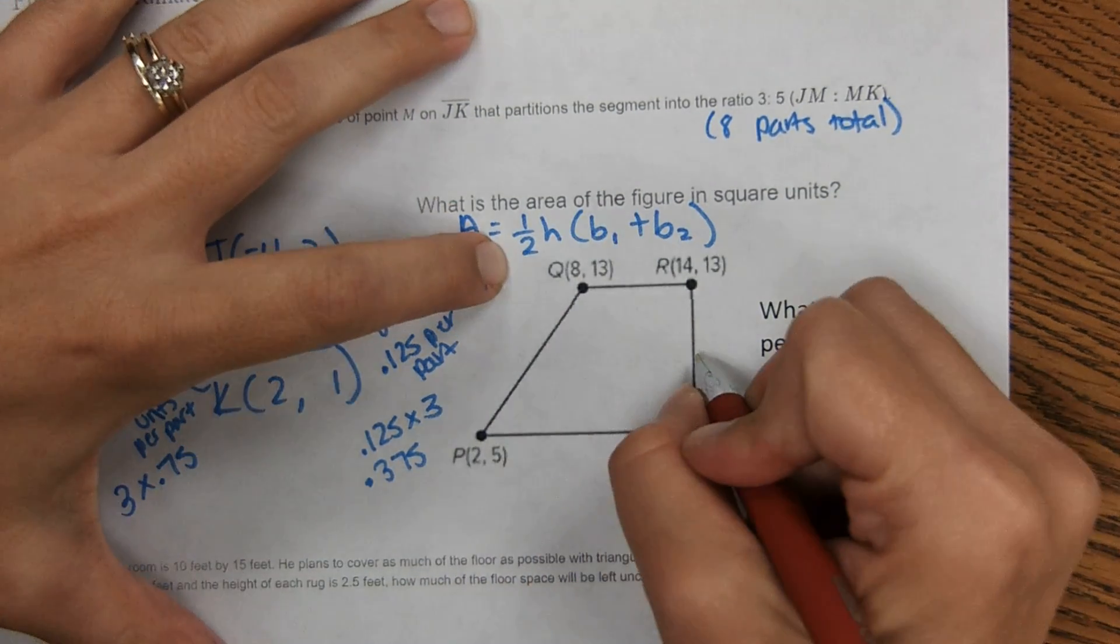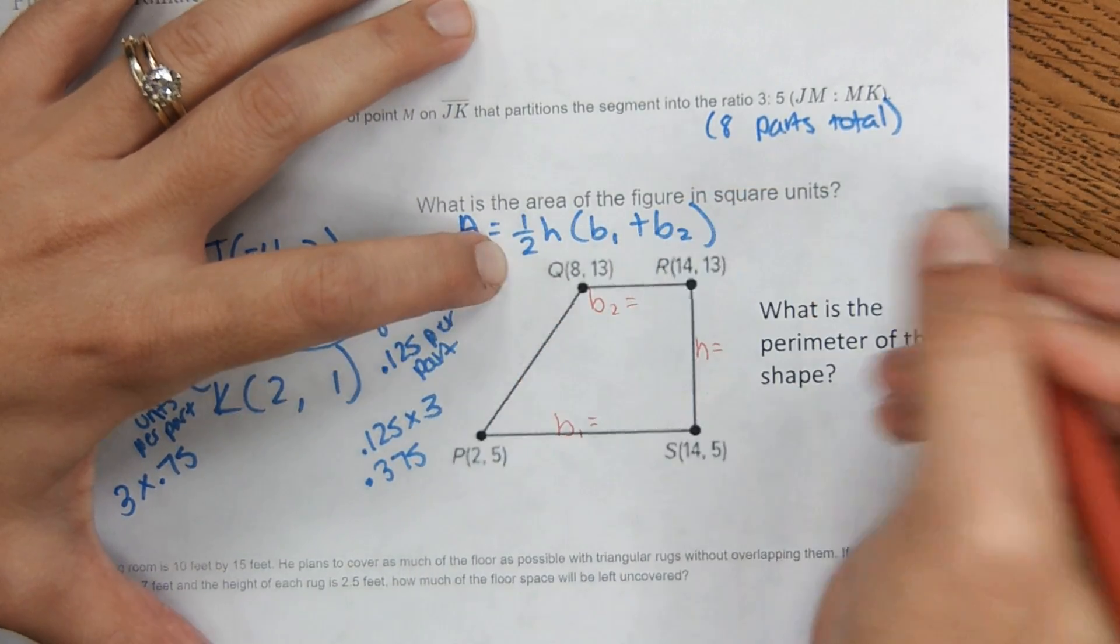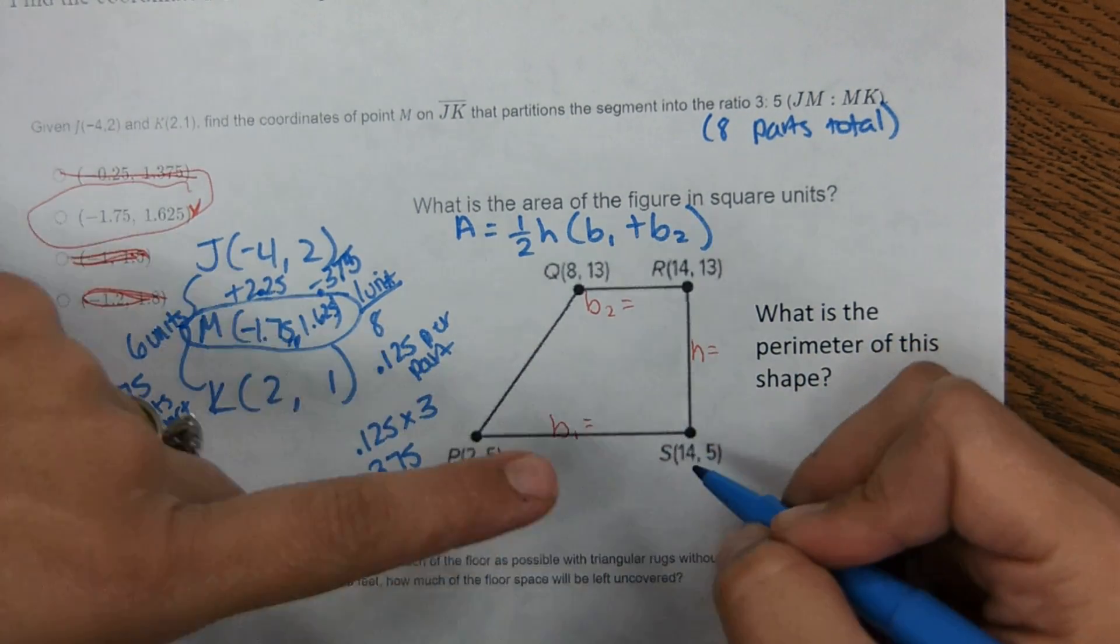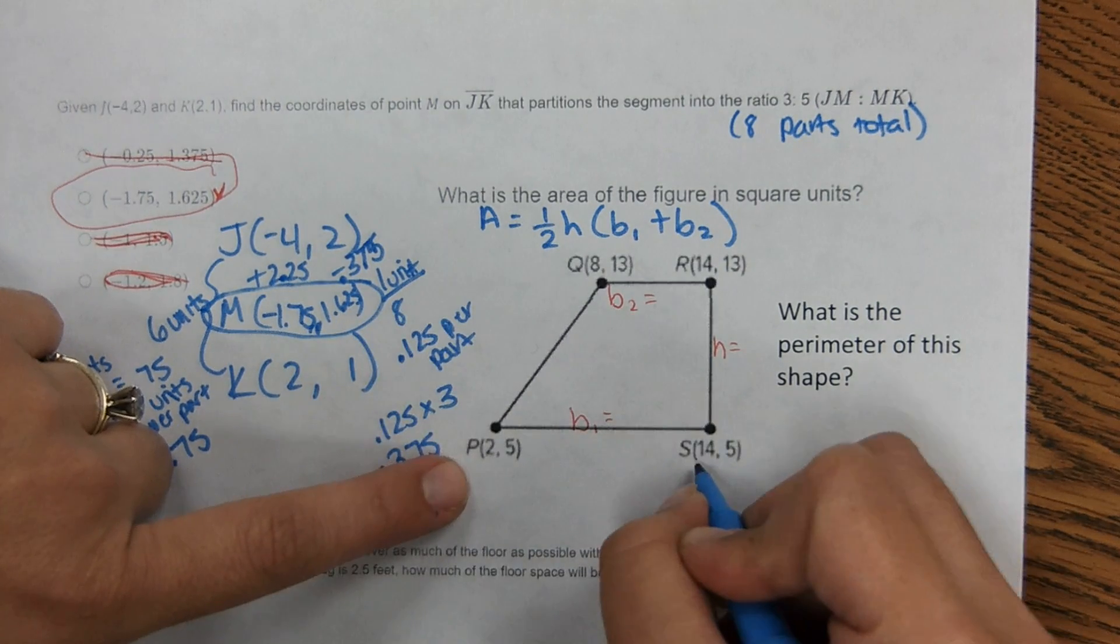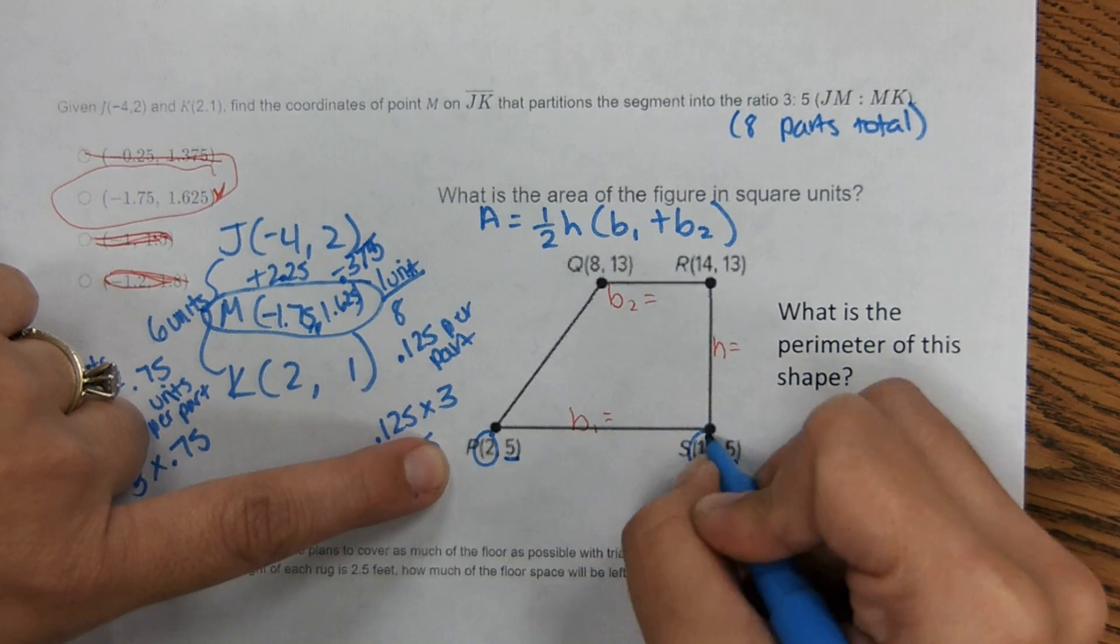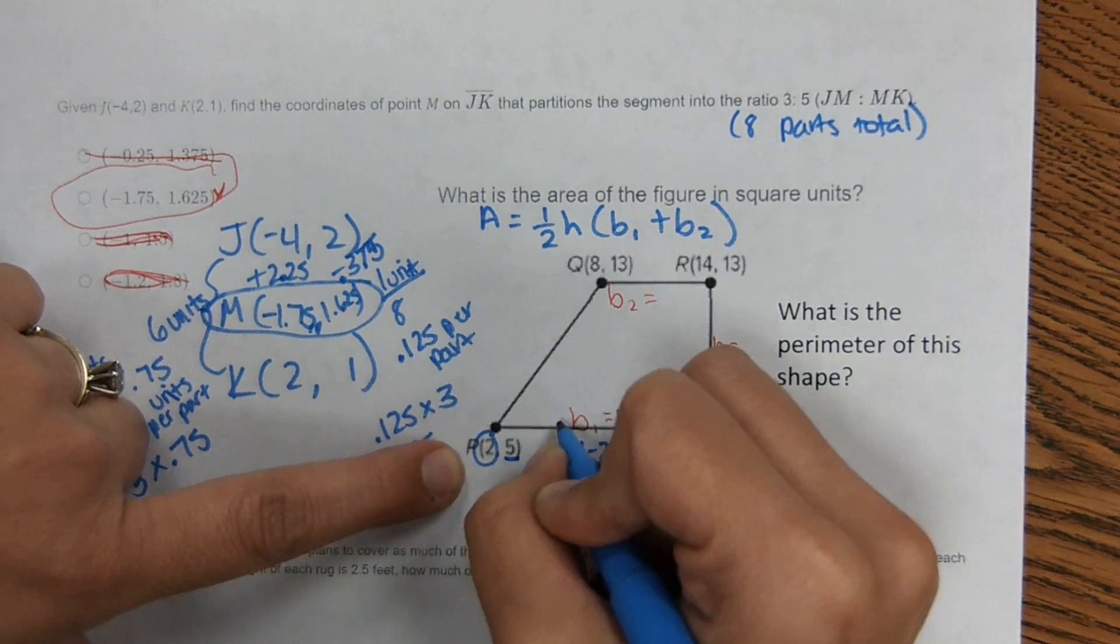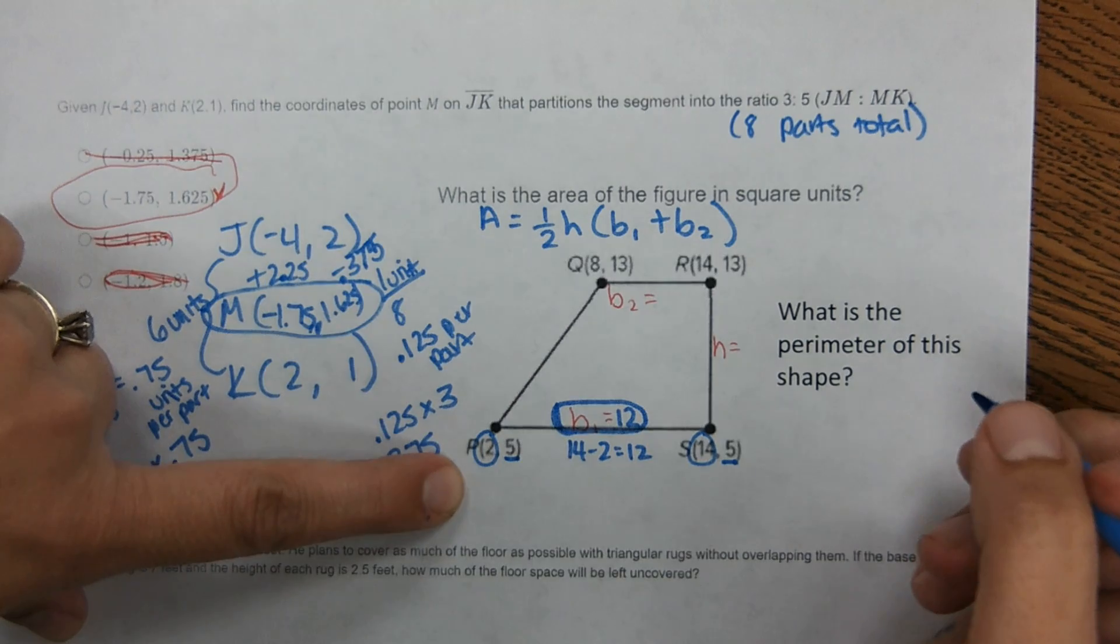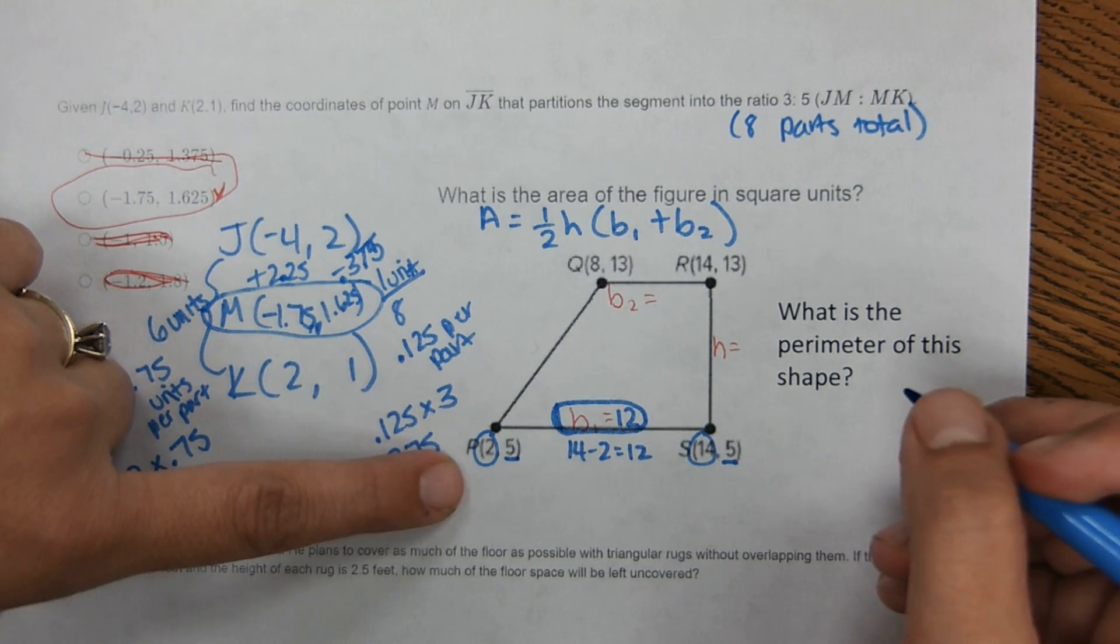Okay, so this is the height. This is base 1. This is base 2. We need these lengths. So what's nice is they're all horizontal and vertical. So we can count units. However, there's no squares to count. But what we can do is just use the coordinates. So notice how these y's are the same. So therefore, we can compare the x values. So 14 minus 2 is 12. So this base is 12 units. I'm going to circle that because I'm going to need that for my equation.